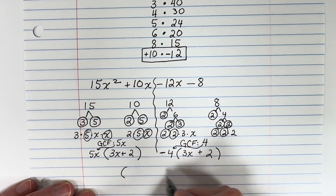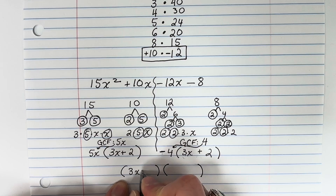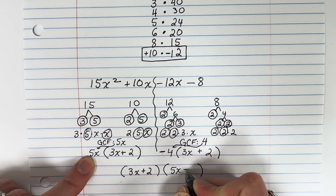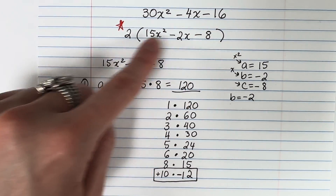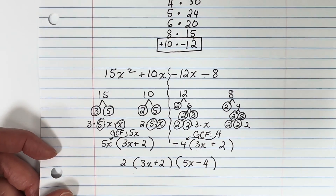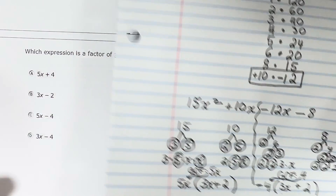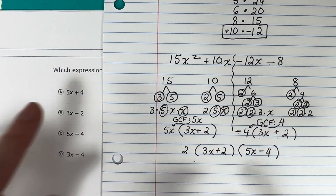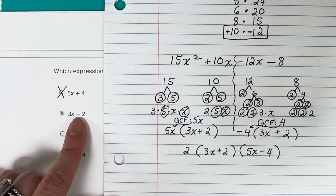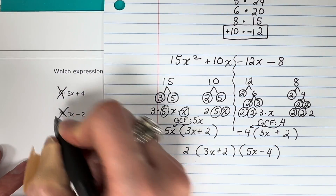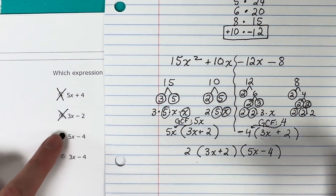Now I put them together. Both groups share the same binomial factor, 3x plus 2 — this is perfect. That goes in the first parentheses, and what's different — 5x minus 4 — goes in the second. Don't forget the 2 we factored out originally, so the full factored form is 2 times 5x minus 4 times 3x plus 2. Looking at the answer choices: 5x plus 4 — no, I have minus 4. 3x minus 2 — no, I have plus 2. 5x minus 4 — yes, that is my answer.